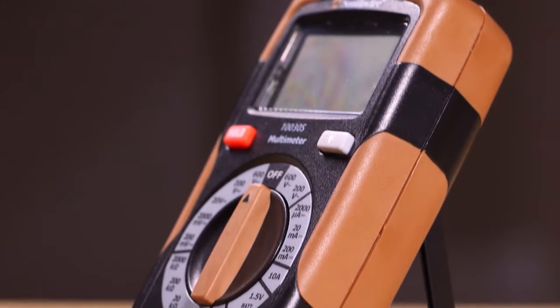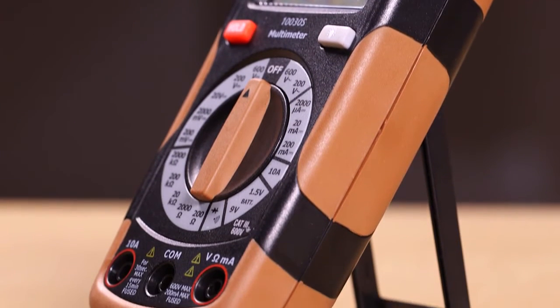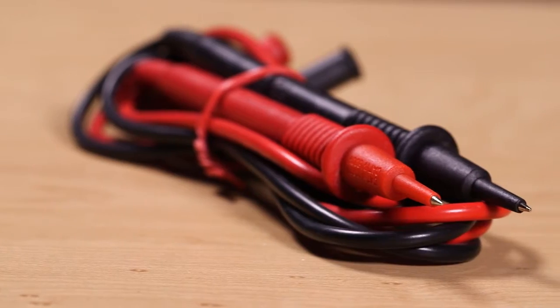The 10030S has a rugged, double-molded housing, and comes complete with instructions, test leads, and battery.